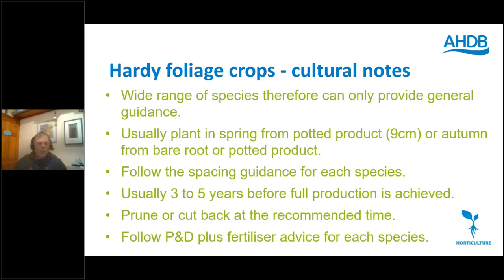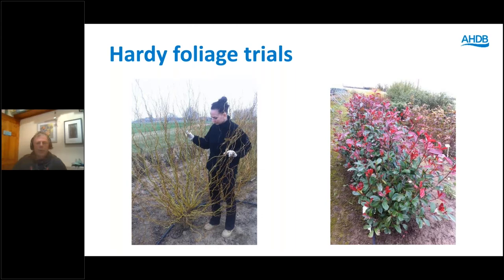Two examples: on the left is twisted willow, an example of twigs, and on the right is Photinia, which is an example of foliage — both of which I think have got some potential for production.